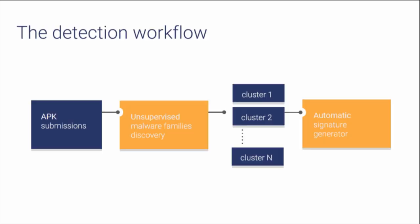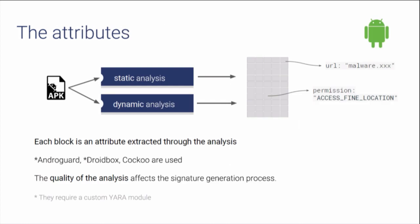Now let's go through the algorithm. The algorithm for automatic malware signature generation is placed within a pipeline very common to many antivirus software houses. The idea is that there is a submission of new APKs every day. Those APKs are analyzed through machine learning techniques — mostly unsupervised techniques — in order to automatically infer new malware families, that is, the clusters. And in the end, for each malware family, you want to generate a signature. This is where my algorithm comes in. In order to generate a signature, you need to start from some attributes, some features extracted from the application through static and dynamic analysis.